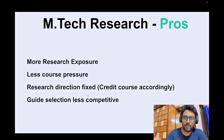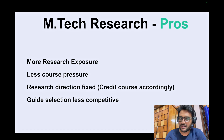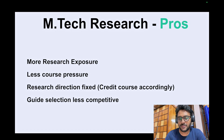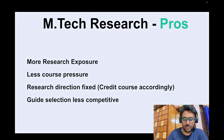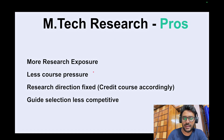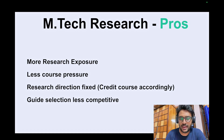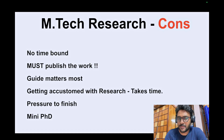The third advantage is that the research direction is fixed for MTech Research students. When you apply and face the interview, your direction is predetermined — for example in computer science whether you'll be doing theory, systems, or intelligence systems. This is decided during admission, so you can credit courses entirely from your chosen pool without the mandatory multi-pool requirement. Also, guide selection is less competitive for MTech Research because very few students are pursuing it, making it smoother to get selected by a professor.